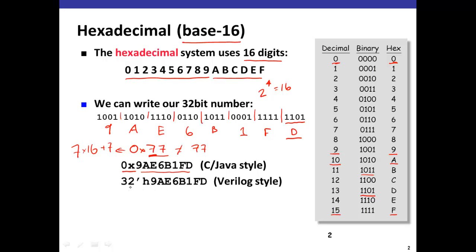In Verilog, we're going to instead prefix it with an 'h' to say this is hexadecimal notation. Again, we're going to specify the size of the signal that we're giving, so this is a 32-bit signal or 32-bit constant, and then we're encoding it in hexadecimal.